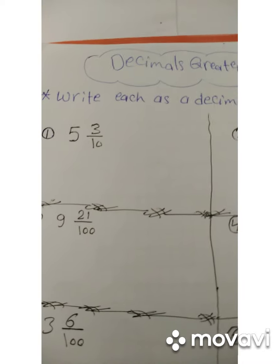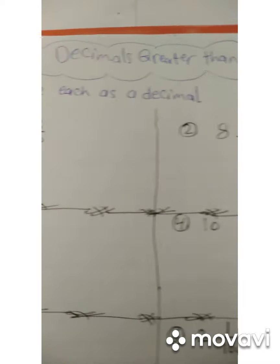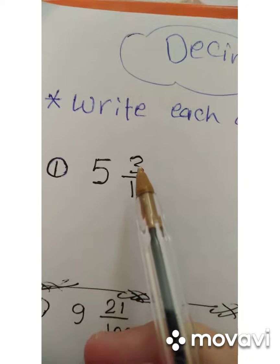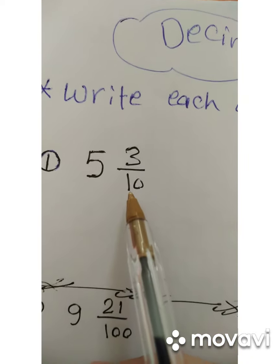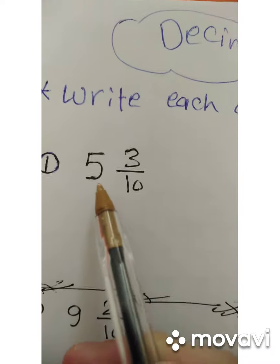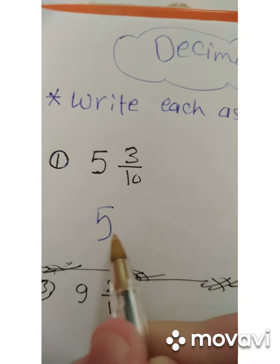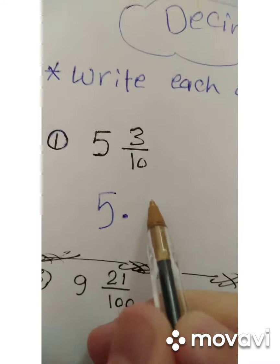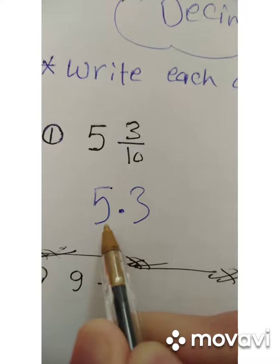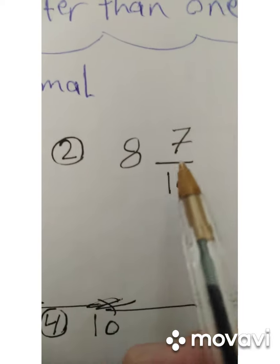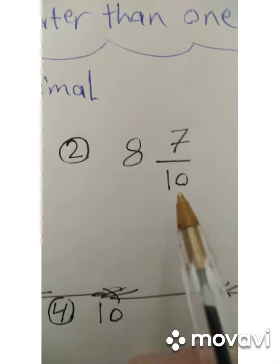Now let's solve another question: write each as a decimal. Number one: we have five and three tenths. Five is the whole, so write five, then put the decimal point. Three tenths has one digit, so write three after the decimal point. We read it as five and three tenths. Number two: eight and seven tenths. The whole is eight, so write eight and put the decimal point.